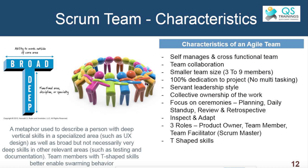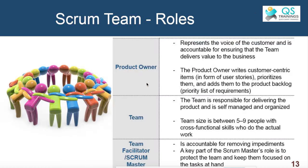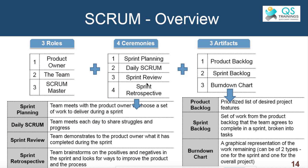A scrum master is not a command and control leader. This person is responsible for removing impediments or blockers, and the role of the scrum master is to make sure the team is focused on the work at hand and not distracted. These are the three roles in a scrum team: the product owner, the team, and the scrum master.